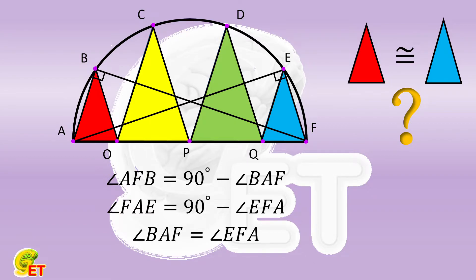So, we obtain that the angle AFB is equal to the angle FAE. These two angles are the inscribed angles subtended by the chords AB and EF, respectively. So, AB is equal to EF. When the corresponding sides of two similar triangles are equal, the similar triangles must be congruent.